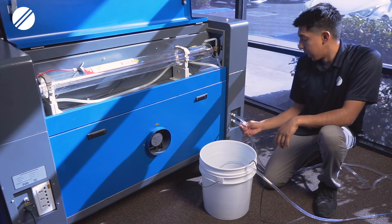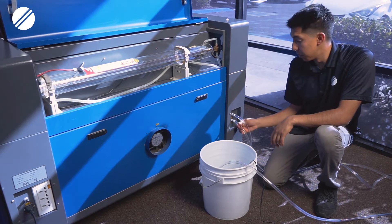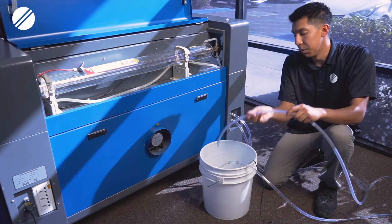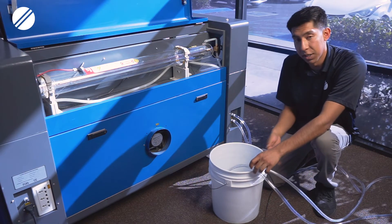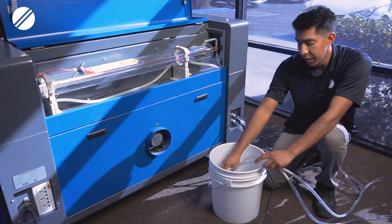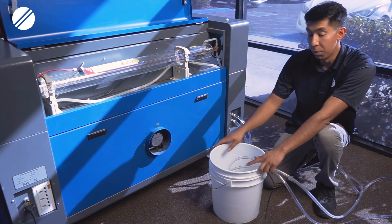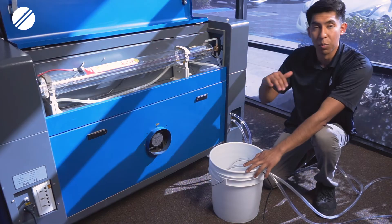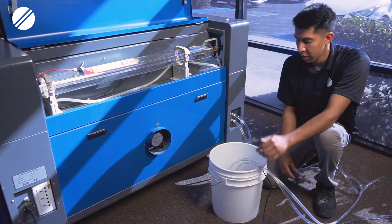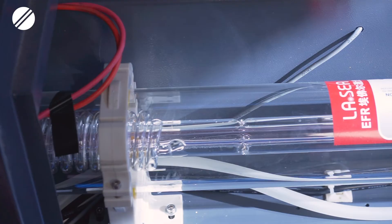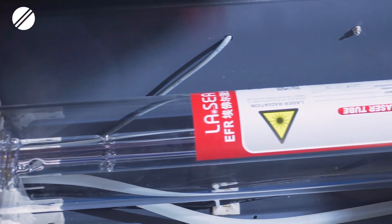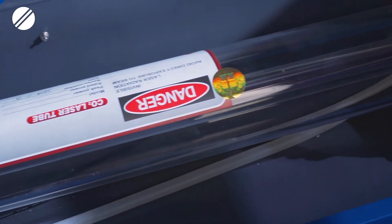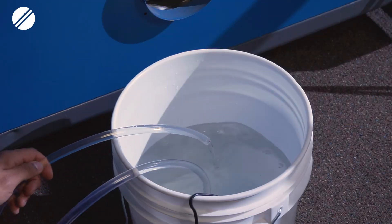You will then take the other hose, connect it to the water outlet connection of the machine, and place that hose inside the bucket. Once those connections are ready, you can now fill the bucket with the distilled water. You have to make sure that your water pump is completely submerged underwater. Once that is ready, you can connect your water pump to your power source and you have to make sure that water is circulating in and out the tube adequately.